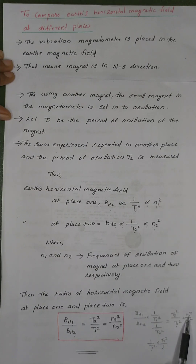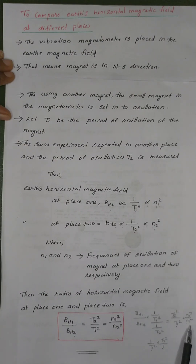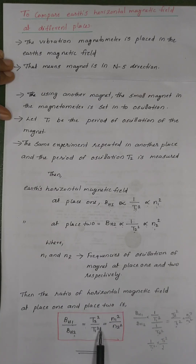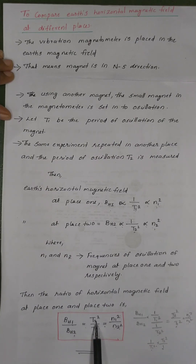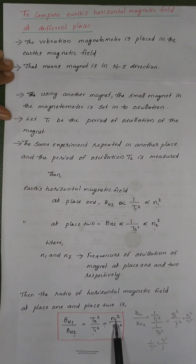Since 1 by T1 equals N1 squared and 1 by T2 equals N2 squared, T2 squared equals 1 by N2 squared. Therefore, BH1 by BH2 equals T2 squared by T1 squared, which equals N1 squared by N2 squared. Here BH1 and BH2 are the Earth's horizontal magnetic fields at place 1 and place 2, T1 and T2 are the periods of oscillation, and N1 and N2 are the frequencies of oscillation at place 1 and place 2 respectively.